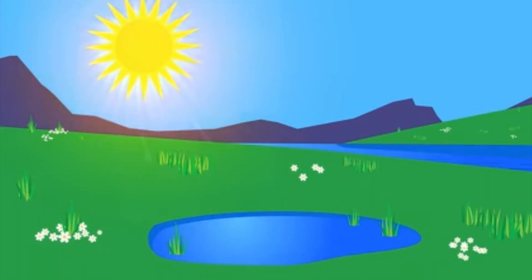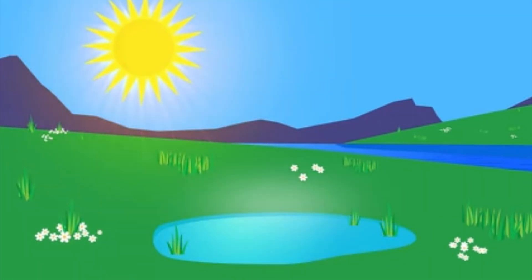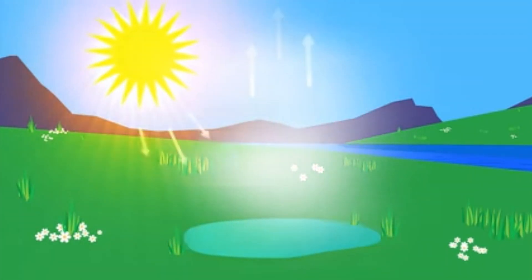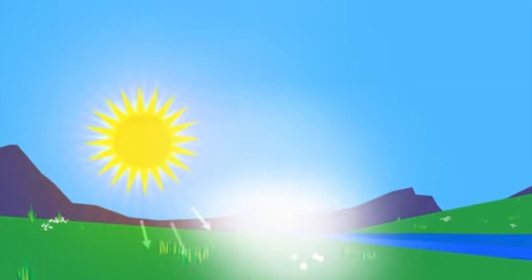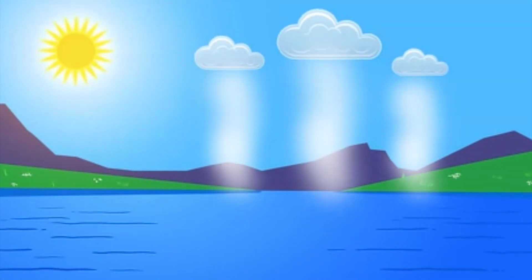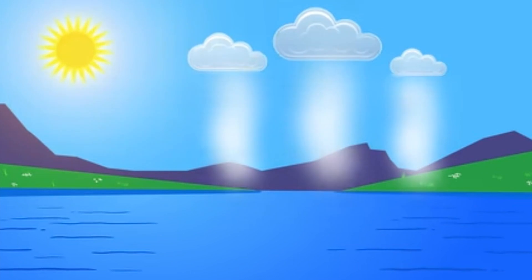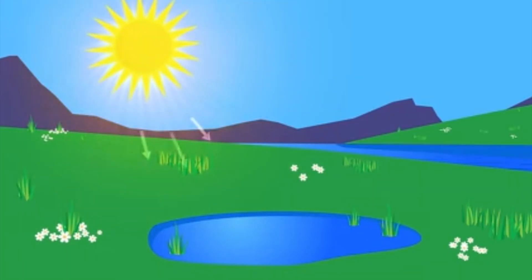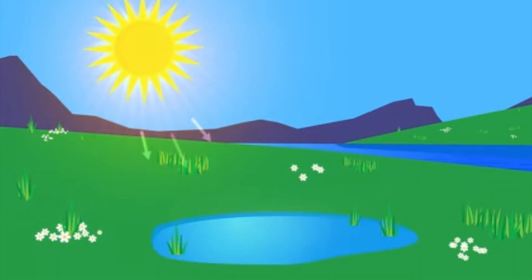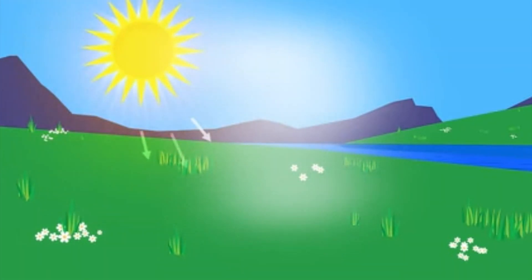During the summer, the sun's heat sucks up the water from the rivers, ponds, seas, or oceans. The water starts going upward into the sky. This is called evaporation.